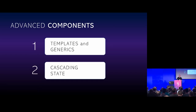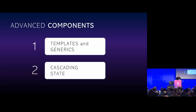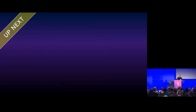Those are two advanced scenarios for components. That's stuff we've already shipped. If you've been using Blazor for the last few months, you've probably seen that. What you might like to see is stuff we haven't shipped yet — what's coming soon? Let's start with debugging.